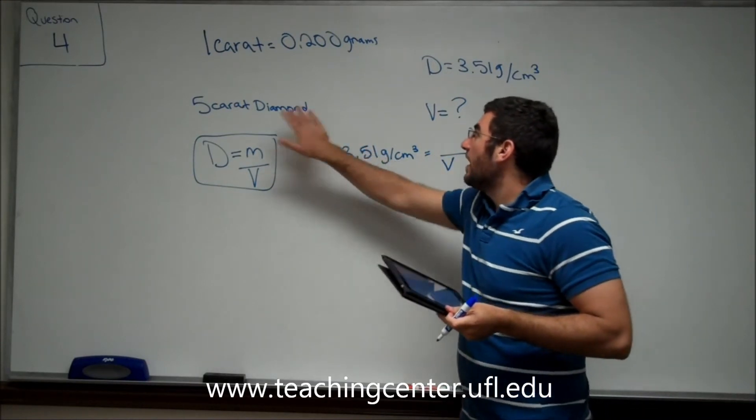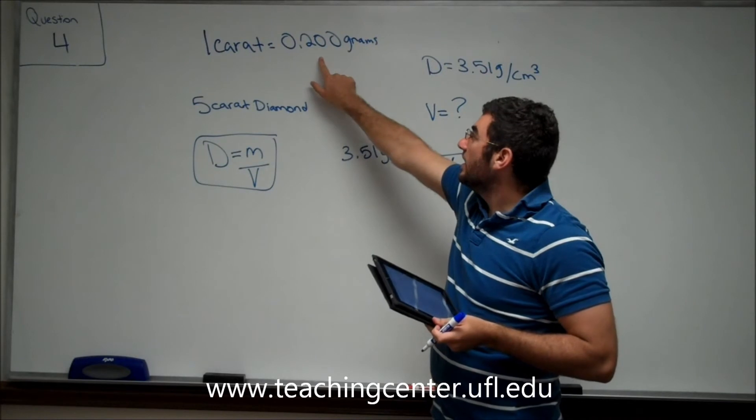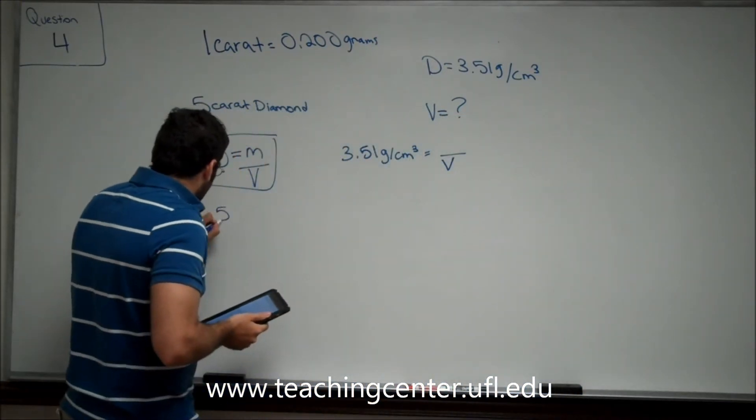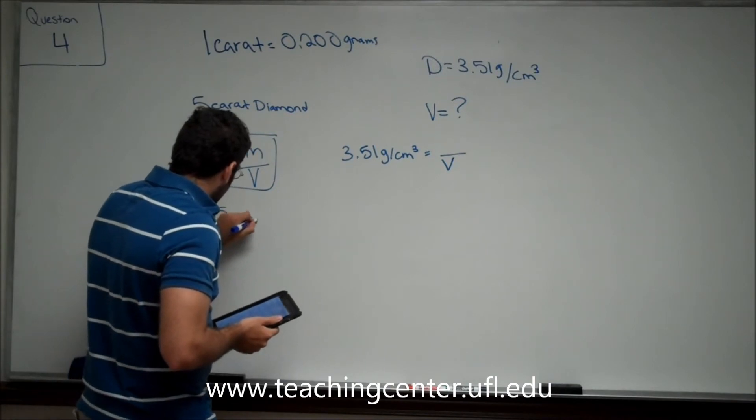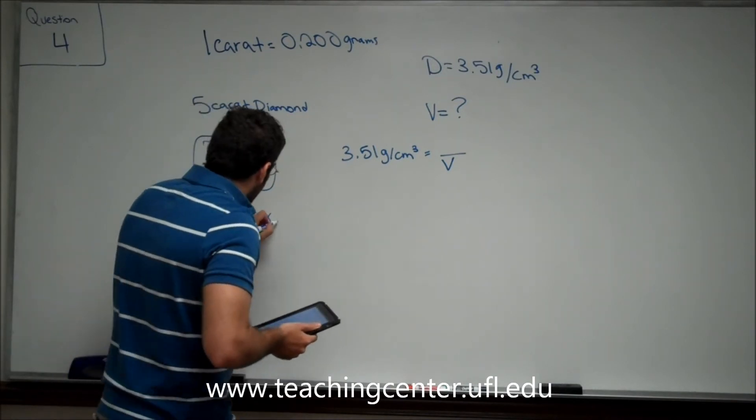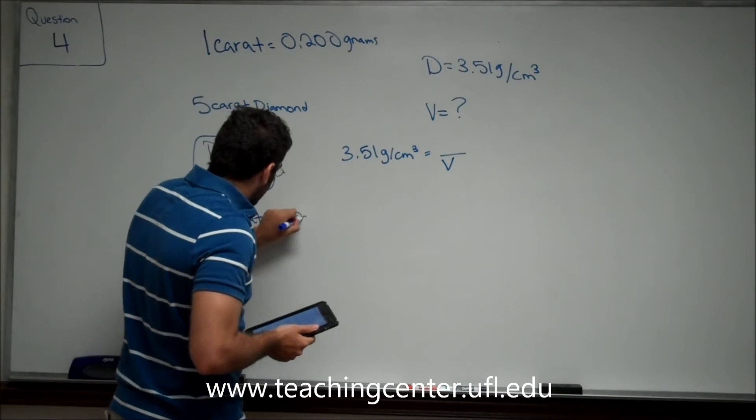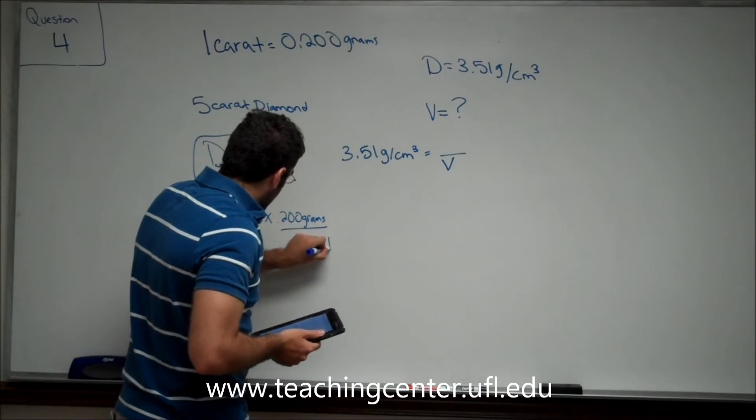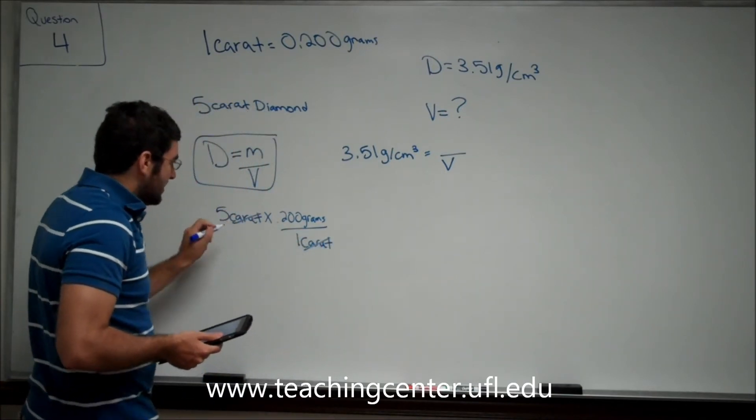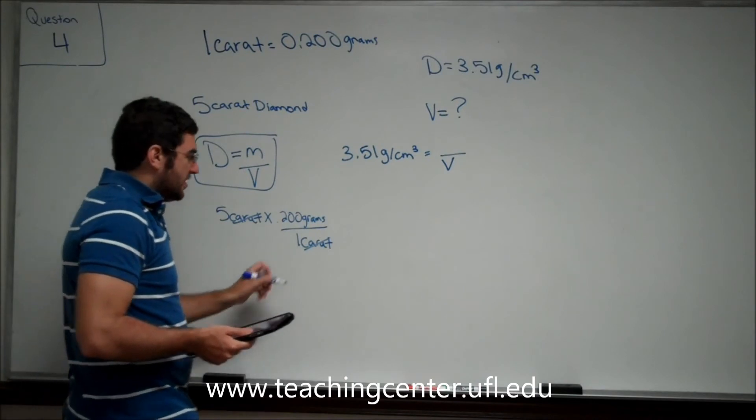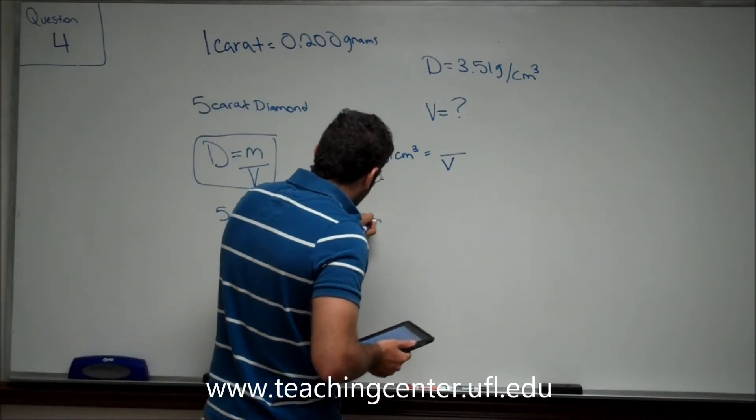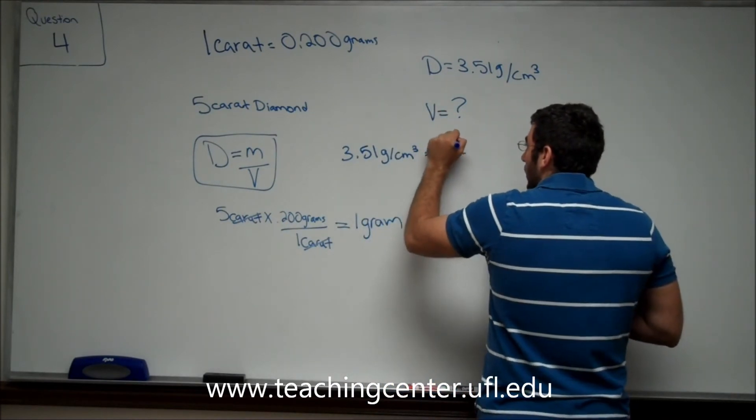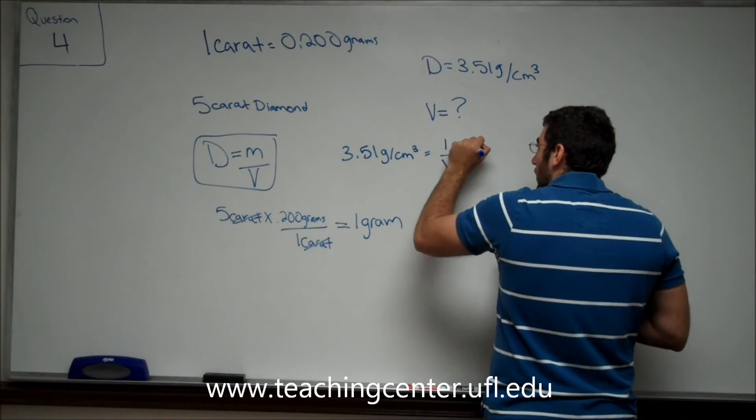Well, what is the mass? We know we have a 5 carat diamond, and 1 carat equals 0.2 grams. So, we're going to go ahead and say 5 carats times 0.200 grams for every 1 carat. This way you see that the carats cross out, and 5 times 0.2 is just equal to 1 gram. So, we have a total mass of 1 gram.